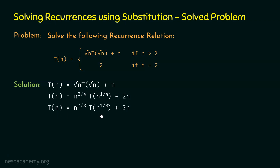Now we can see the pattern. We have n^(1/2), then n^(3/4), then n^(7/8). The denominators are always powers of 2: 2^1, 2^2, 2^3. The numerators are always one less than the denominators: 1 = 2−1, 3 = 4−1, 7 = 8−1. So if the denominator is 2^k, the numerator is 2^k − 1.